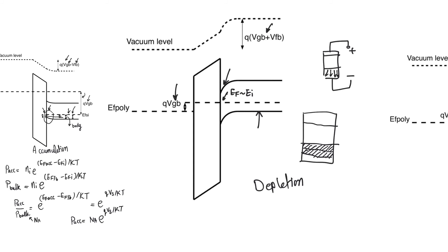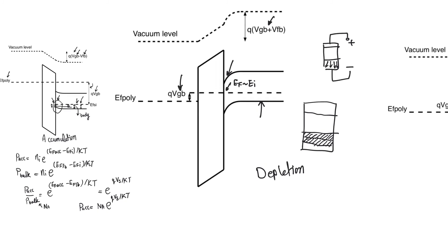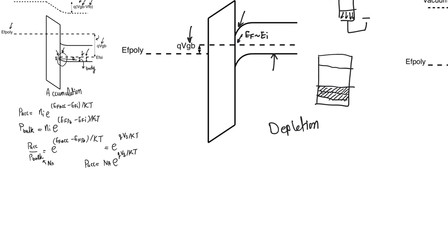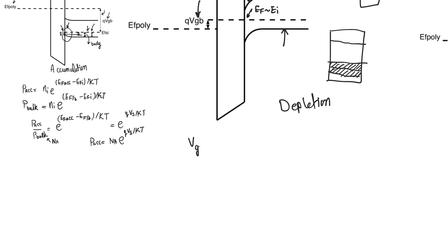What we care about most is calculating the amount of charge next to the oxide. This will be a depletion charge — an ionic charge in this case — but when we talk about inversion mode it will become an electron charge, which is critically important as it is the charge that will move through the channel of a MOSFET. We can do this using the basic equation VGB = V_oxide + V_surface − V_flatband, along with the Gaussian equation for continuity of charge at the surface, which states that ε_oxide · E_oxide = ε_silicon · E_silicon plus any surface charge that accumulates in silicon.